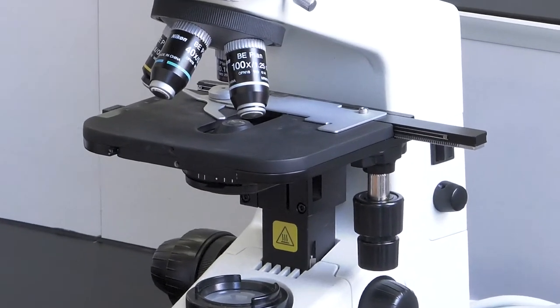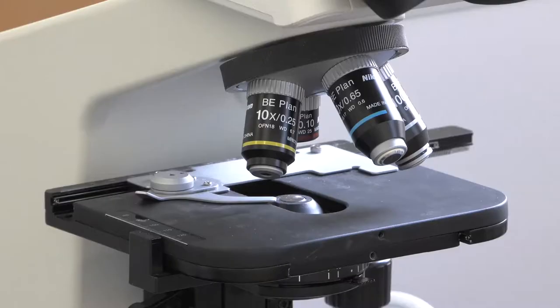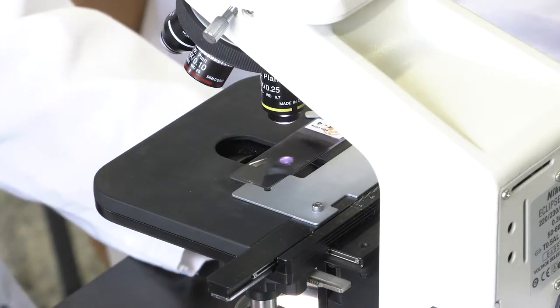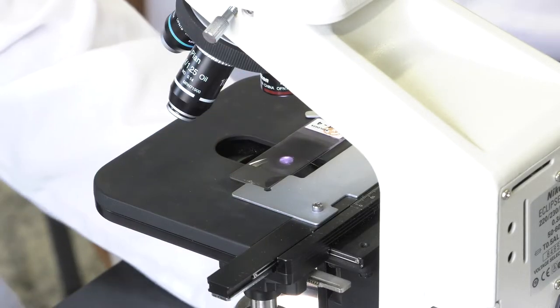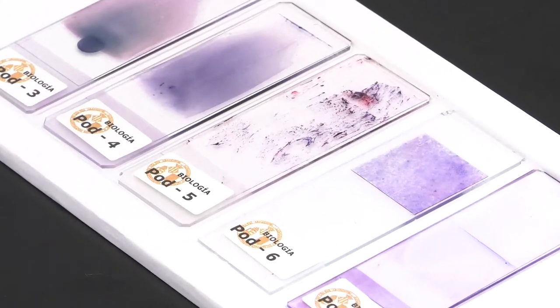The stage is located on the arm of the microscope. It is the surface where the preparation that we want to observe will be placed. And what is the preparation that we are going to observe with the microscope?